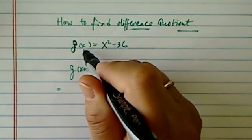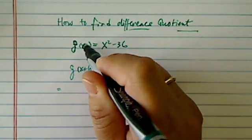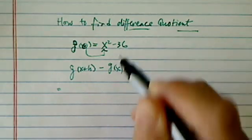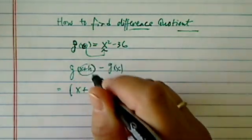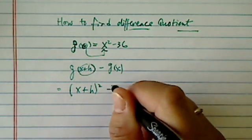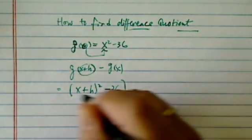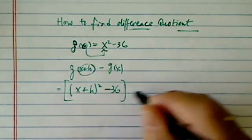Let's get right to it. G of x says whatever you gave me, I'm going to square it and take 36 away. So if we were given x plus h, then we'll have the same format. So it's x plus h squared minus 36.